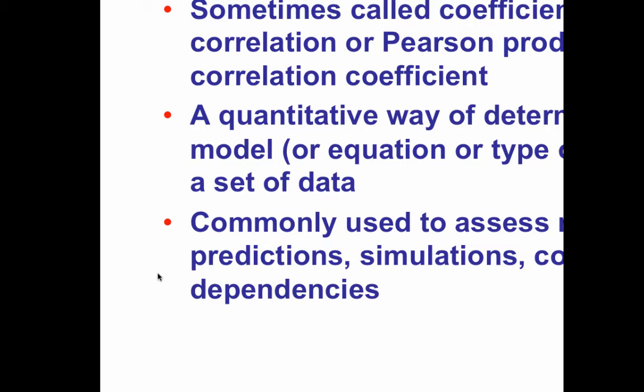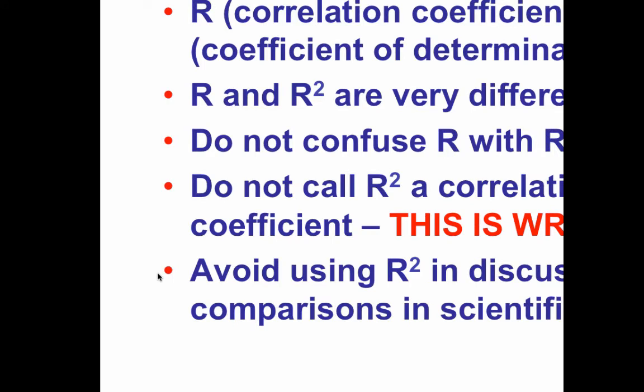A pet peeve: the correlation coefficient R is what we use, and there is a thing called the coefficient of determination, which is R squared. Many people call R squared the correlation coefficient — 99% of people — but that's technically and semantically wrong. The strong historical preference was to use R and quote that as the correlation coefficient. If you're using Microsoft Excel, take the square root of the R squared and quote that as your correlation coefficient.